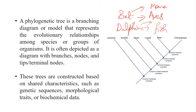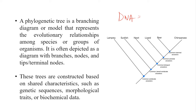Such mistakes happen when you go by phenotypic traits. But now, by DNA or protein analysis, we can easily construct, correlate, and segregate species, and determine which ones are near or far away from each other.